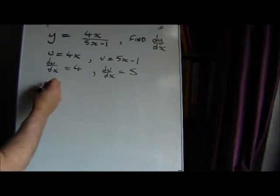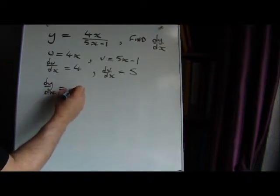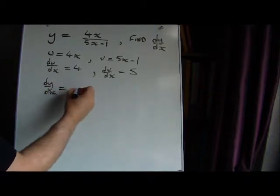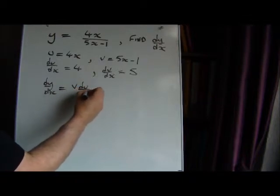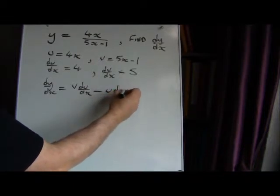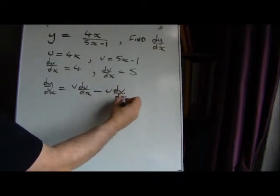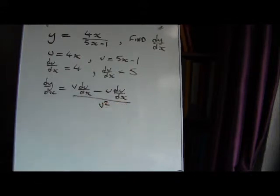The formula for the quotient rule to give us the gradient dy/dx looks quite complicated but it's like this: it's the bottom times the derivative of the top minus the top times the derivative of the bottom, and all of that is divided by v squared.